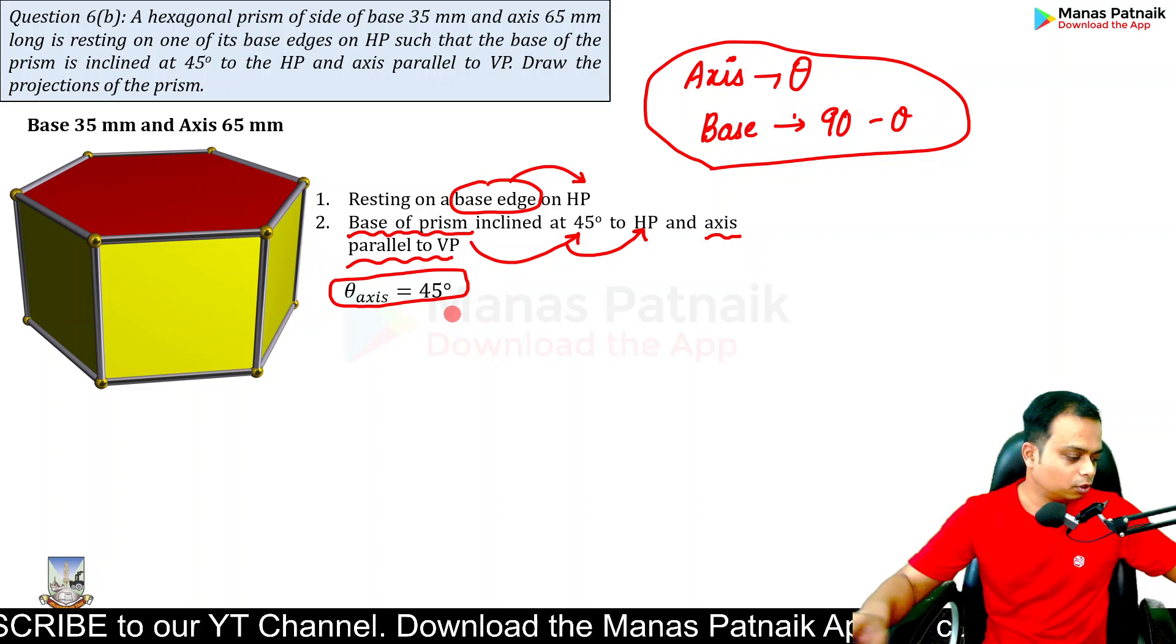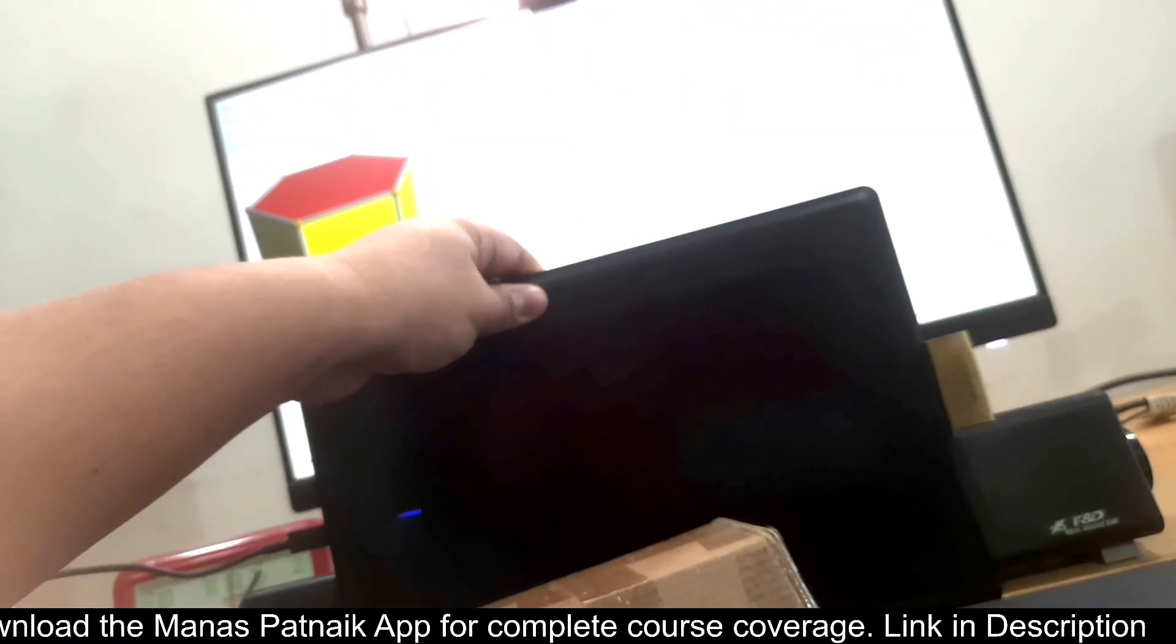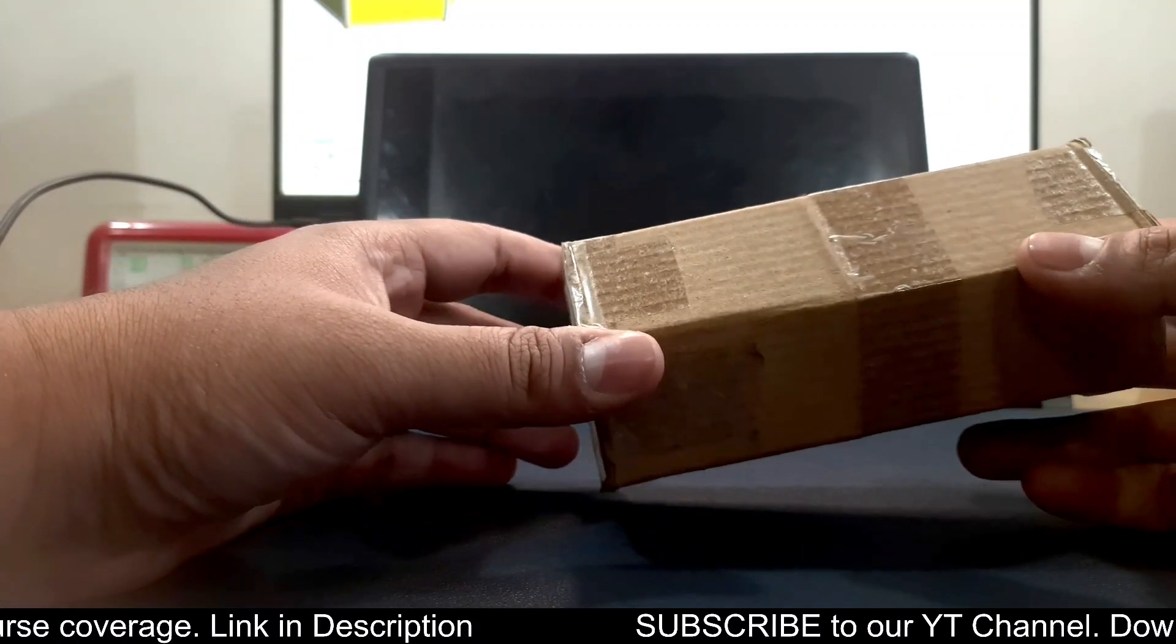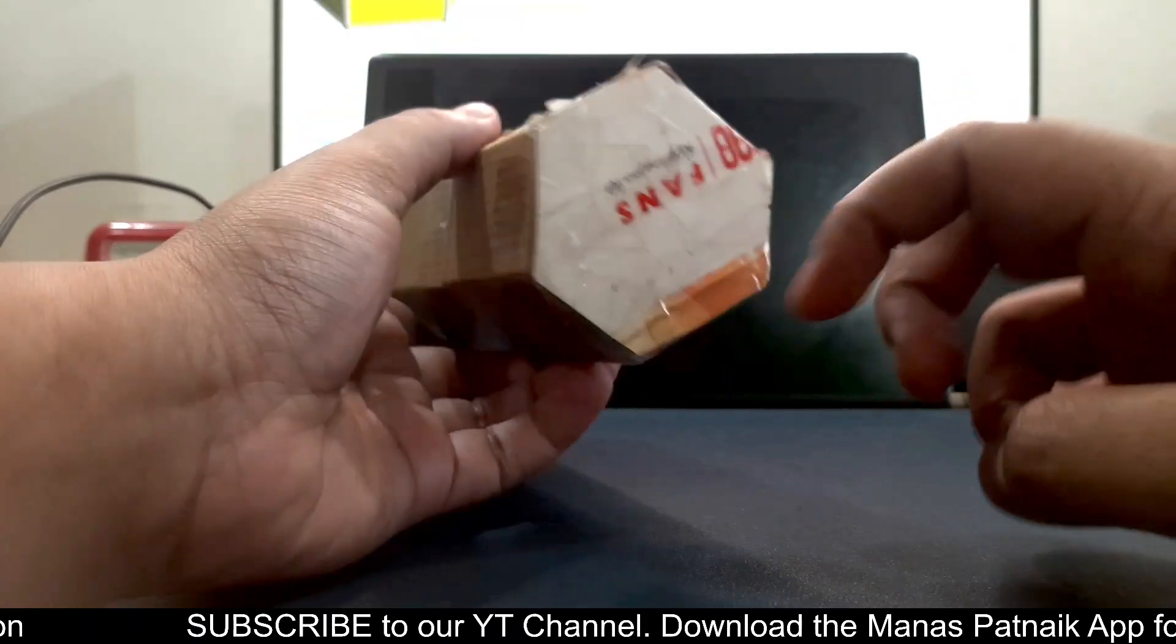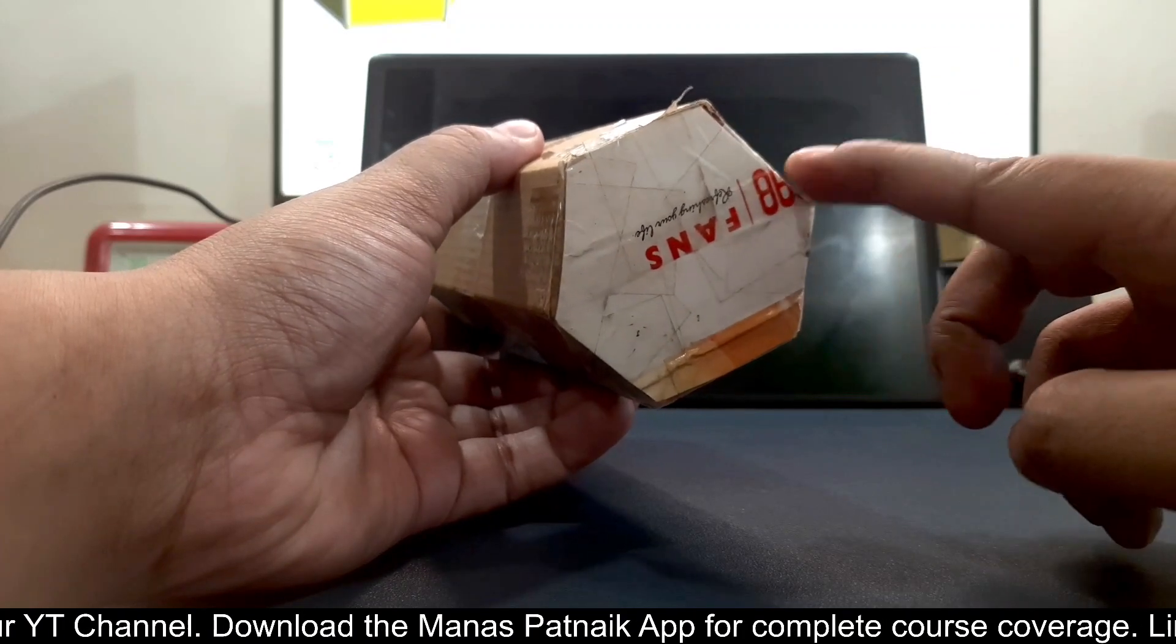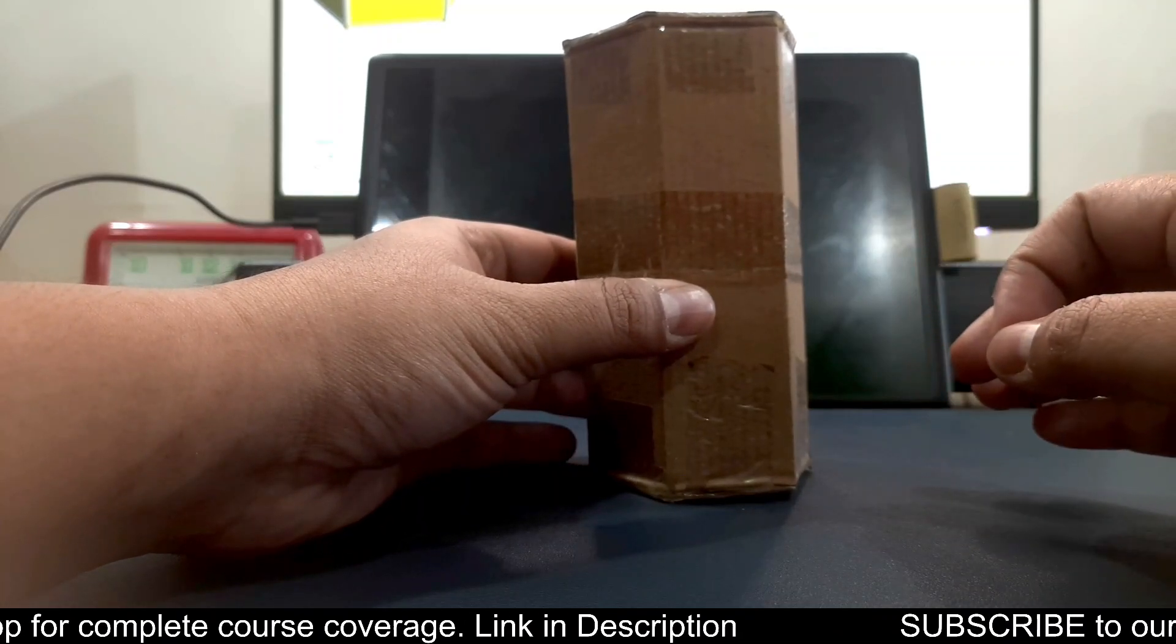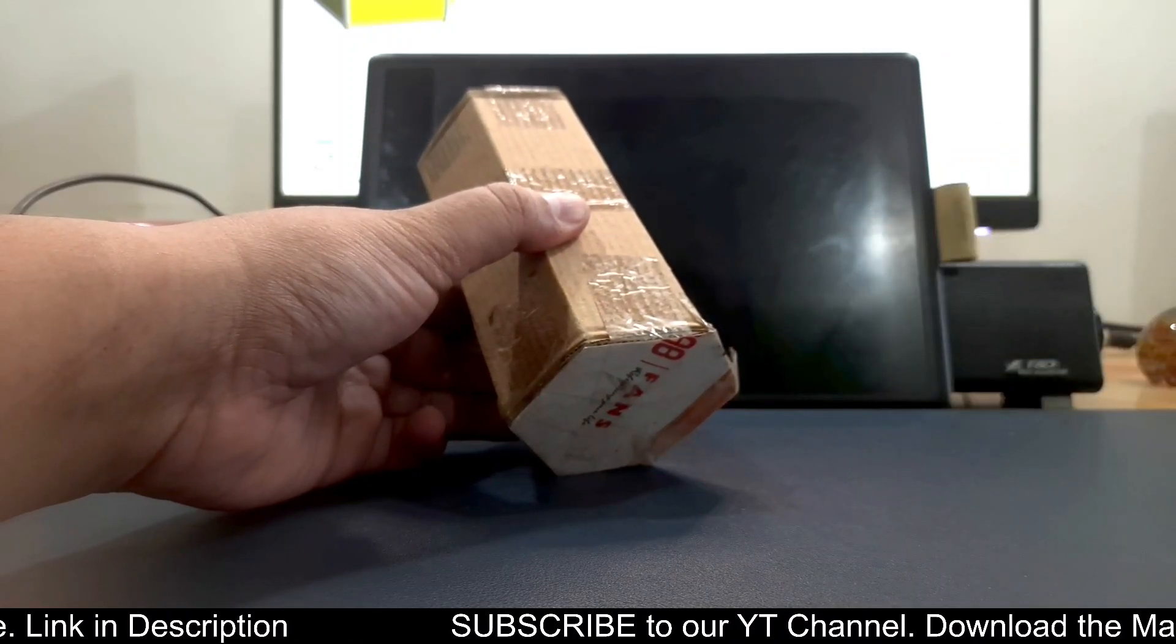We are going to incline the base only and not the axis. Let me take you to my cell phone mode and show you the object. Let's make this writing pad in the form of a vertical plane. This is our object. We'll keep it in the standing position for step number one. The condition which has been given in the problem is that the base edge—this basically is the base top center, this is the top center at the top, this is the top center at the bottom. When you connect these two points, that line is an axis whose length is 65mm. All of these base edges are 35mm long.